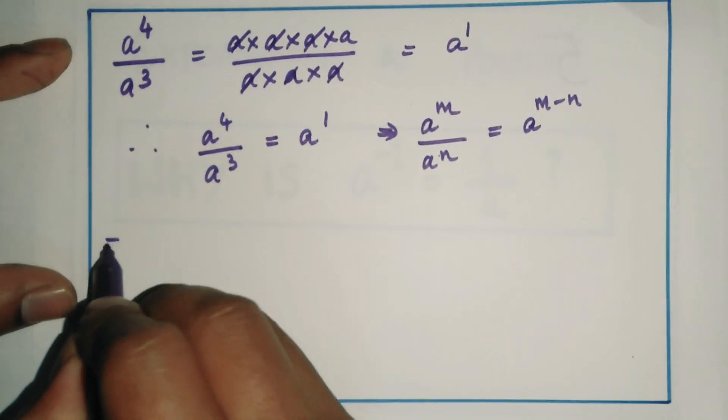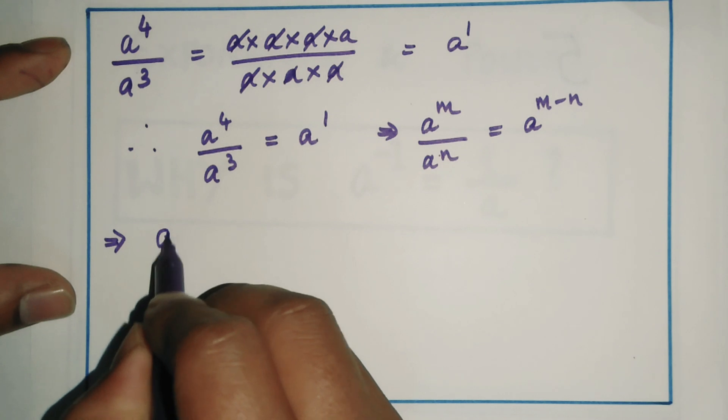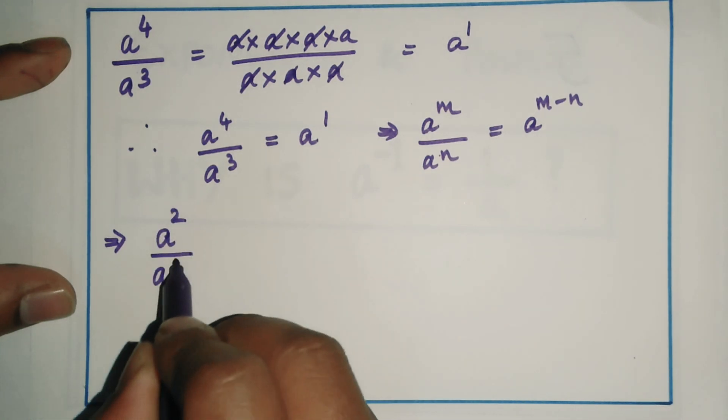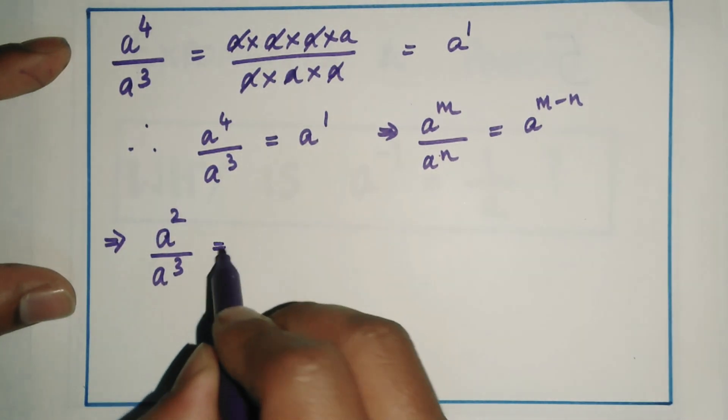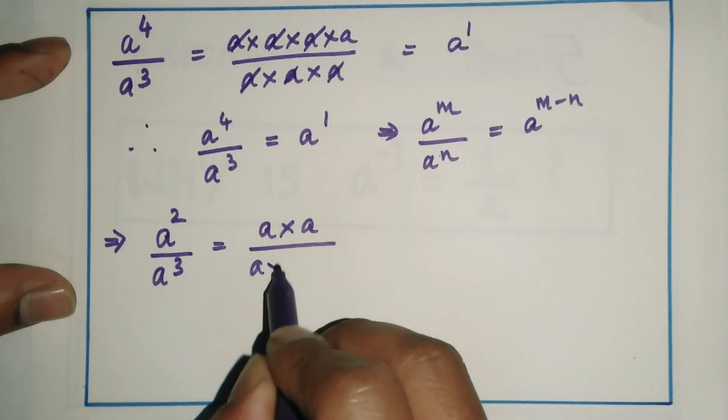I'll use the same method to solve another problem: a^2 by a^3. I expand the numerator and the denominator.